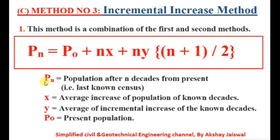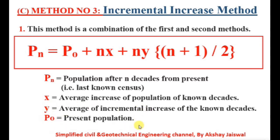Pn means the year in which we are going to find out the population. The next notation is X — X is the average increase in population of known decades. The next notation is Y — Y is the average of the incremental increase of the known decades. And the last notation is P0, which is the present population, meaning the last known population available from census data.